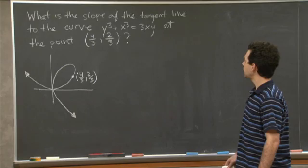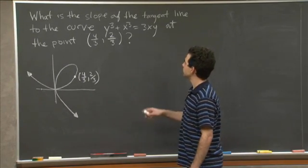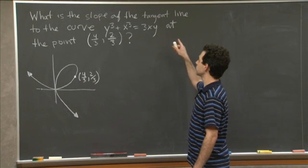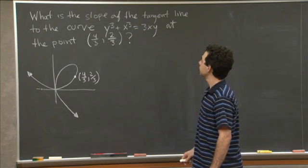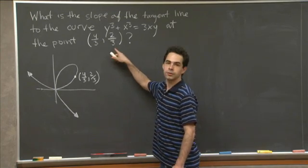Here I have a curve that's defined by the implicit equation y cubed plus x cubed equals 3xy. And I'd like to know what the slope of the tangent line to that curve is at the point 4 thirds, 2 thirds.